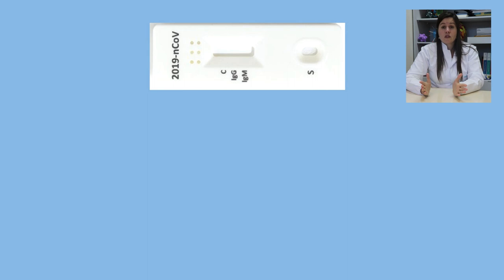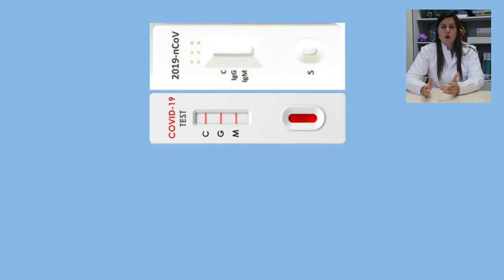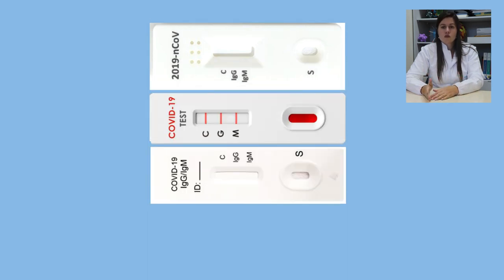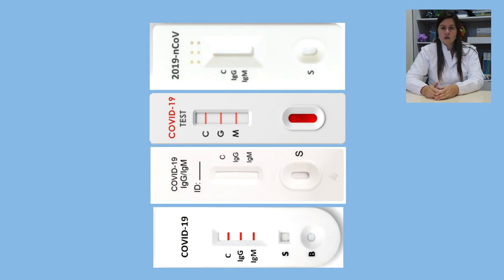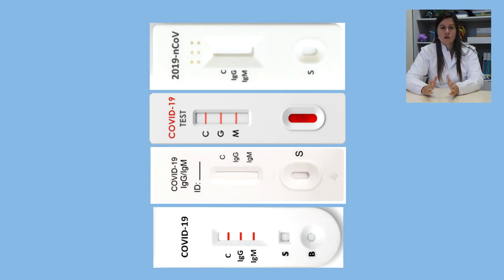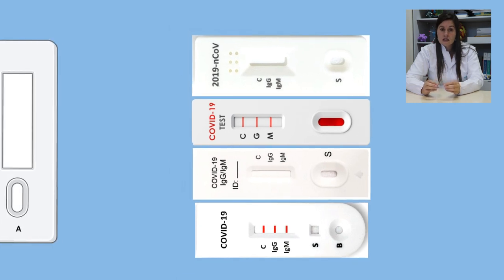Vários testes rápidos para a COVID-19 estão no mercado. Alguns visam a detecção de antígenos, ou seja, proteínas do vírus, mas a grande maioria visa a detecção de anticorpos, sendo que no mesmo teste se faz a detecção de anticorpos específicos do tipo IgG e do tipo IgM contra o SARS-CoV-2.